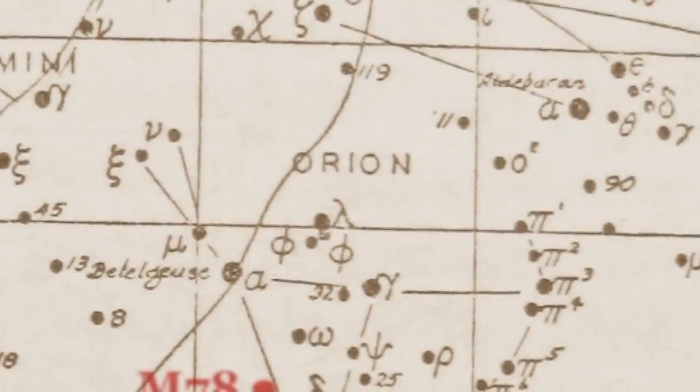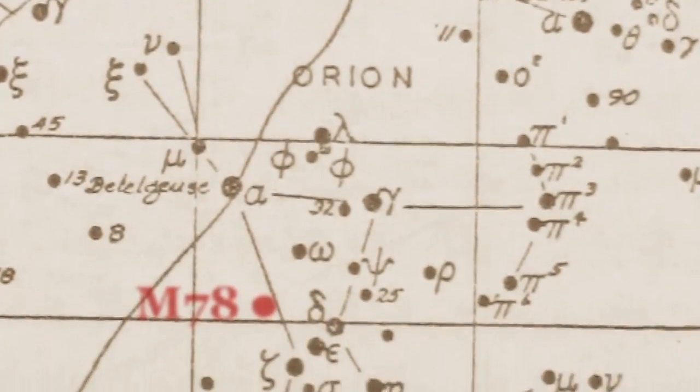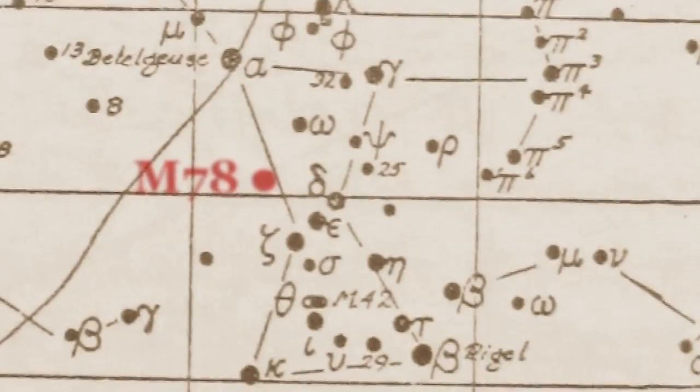This image was taken right here in Clayton Bay in this observatory in South Australia. So it's a southern object that we can see almost directly overhead. It's located in the constellation Orion.